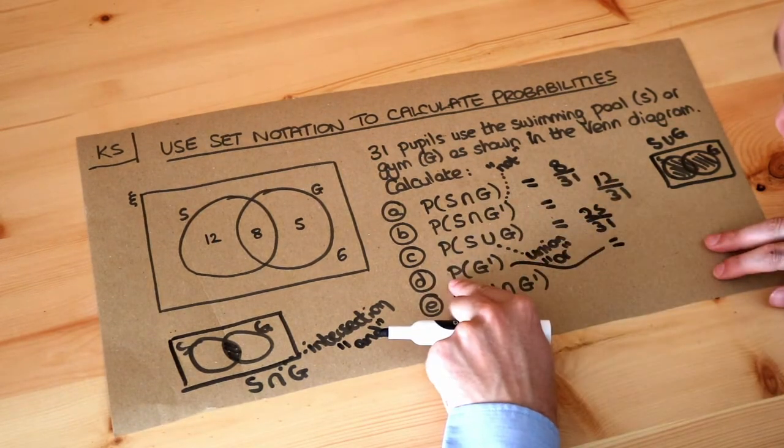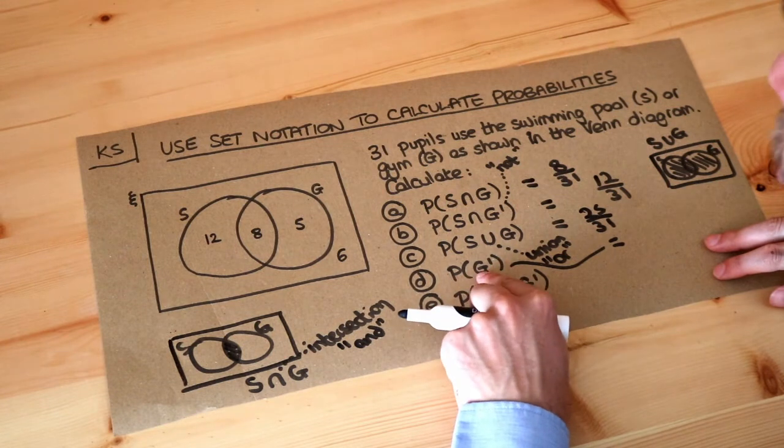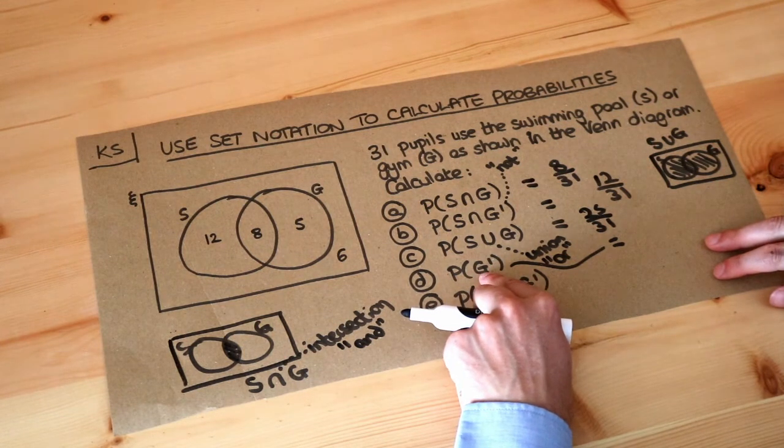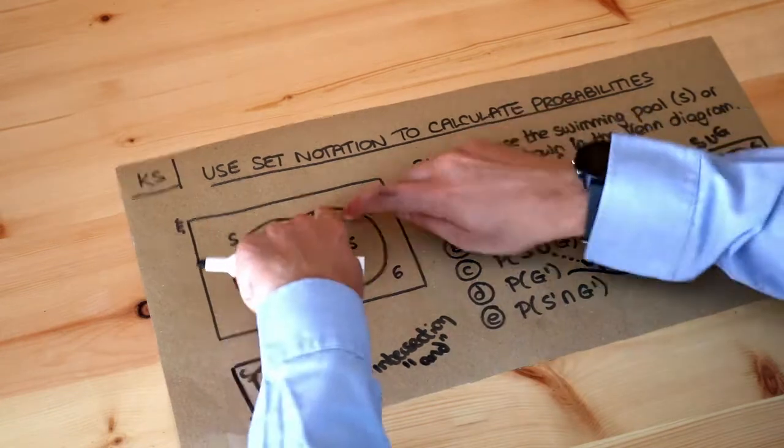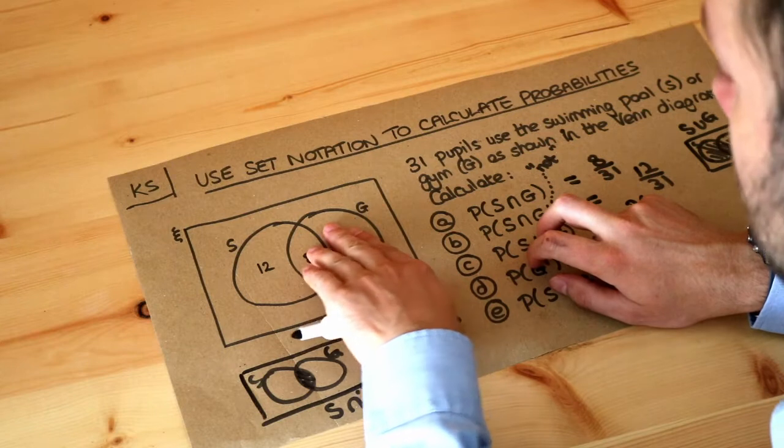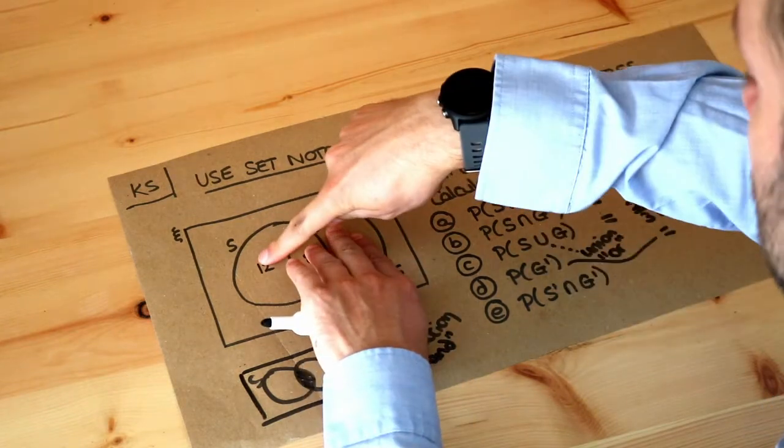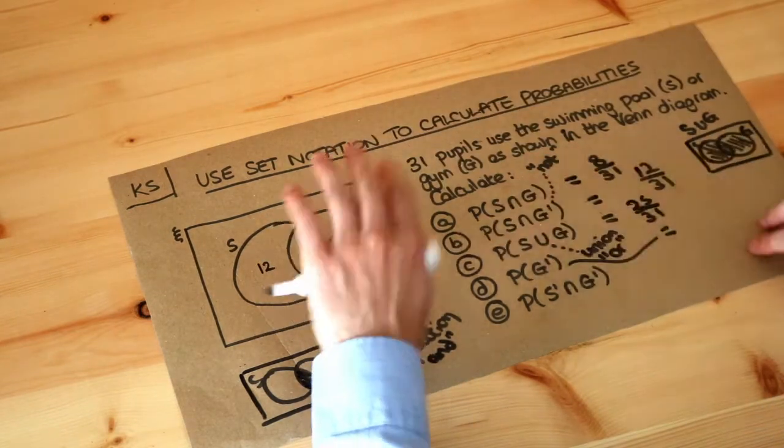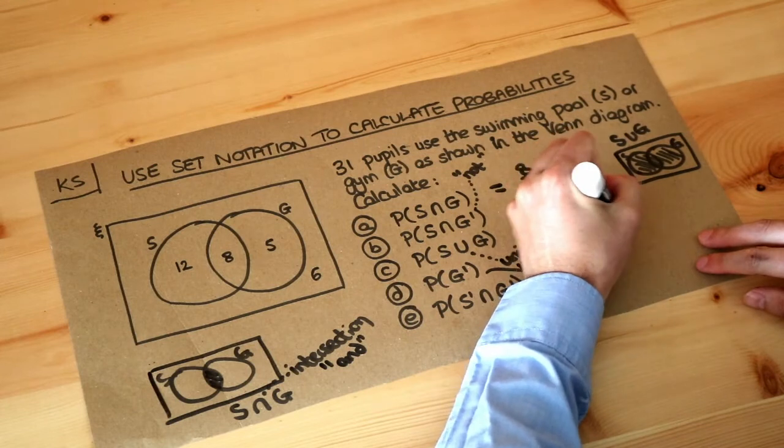Now the next one, the probability of G prime—the probability that we're not in G. Well, this circle is where we are in G, so what stuff is outside of G? If we cross out the G, we've got the 12 students here and the 6 students here—that's 18. So it's 18 out of 31.